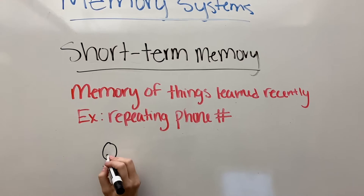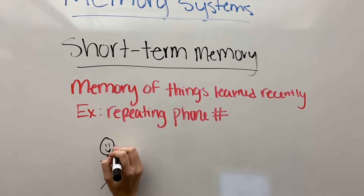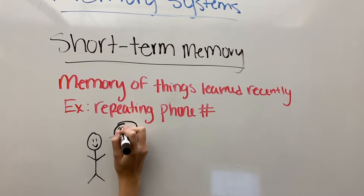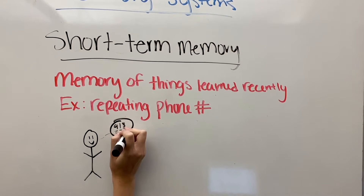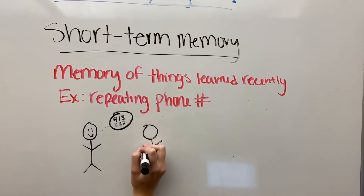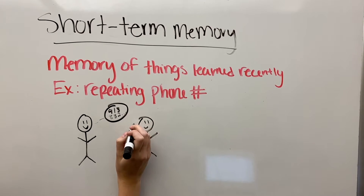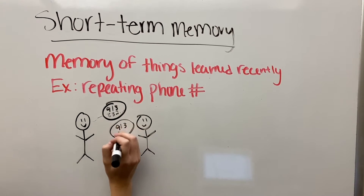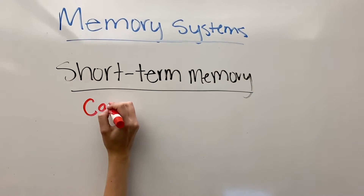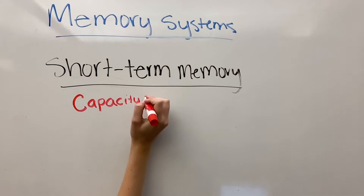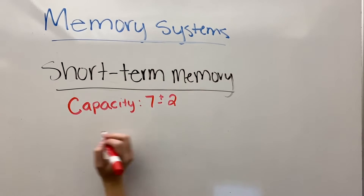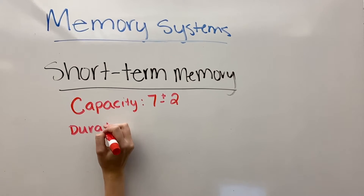For short-term memory, chunking helps to remember things. As with phone numbers, we tend to chunk them, like 913, 832. This also explains the beginning of our video, with chunking the letters into typical groupings like LOL. Short-term memory also has a capacity of seven things, plus or minus two — so you can remember either five or maybe nine.